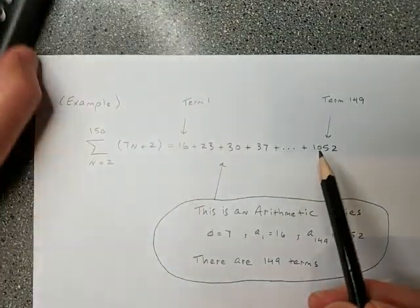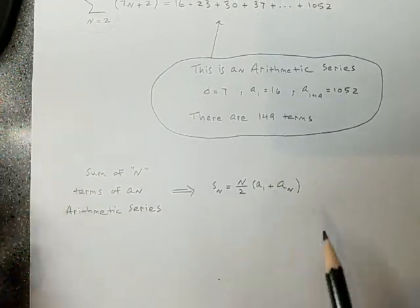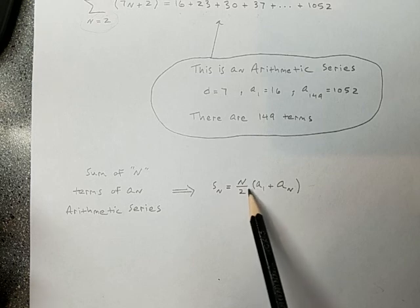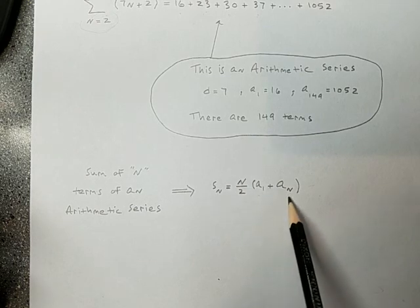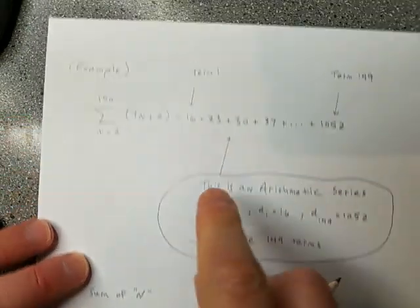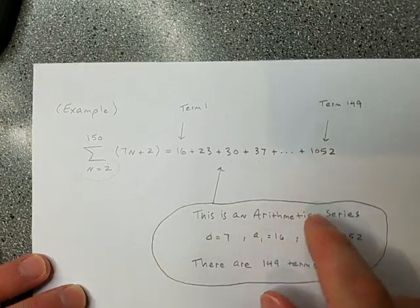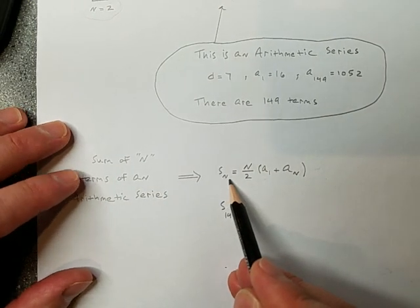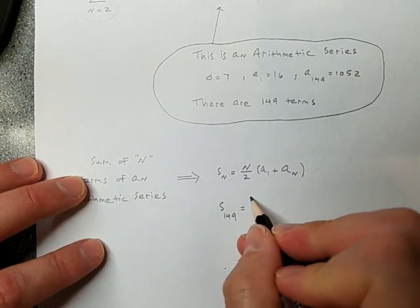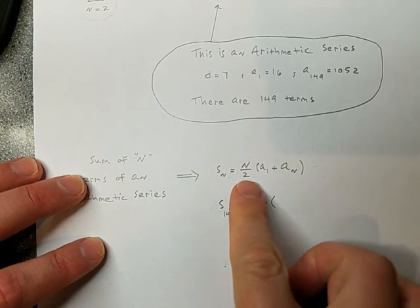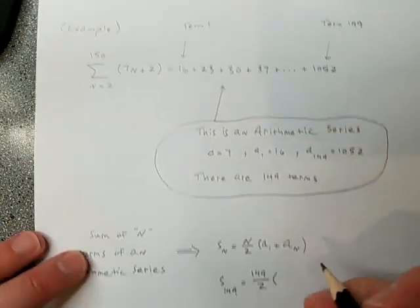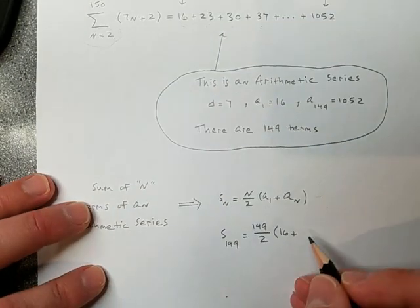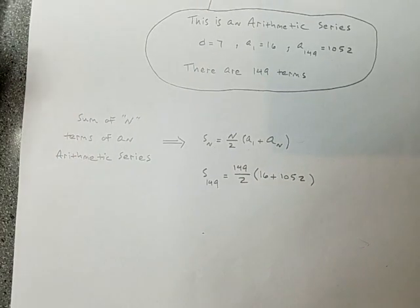Now, I think that that's a little too much to do by hand. So I'll remind you of a formula that I gave in another video. The sum of n terms of an arithmetic series is this: n over 2 times the first term plus the nth term. So if I want, let's see. How many terms are we adding together right there? I made the case to you that there's 149 terms. So I want to find the sum of the first n terms being 149 terms. So I'll do like this. What's the first term? 16. What's the 149th term? 1052.